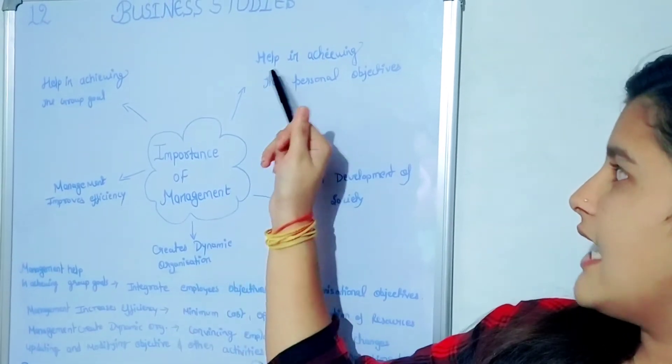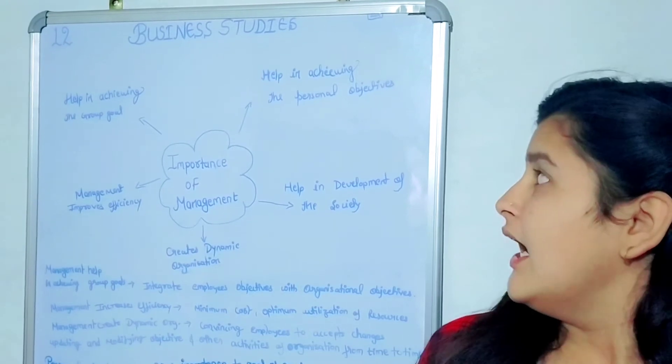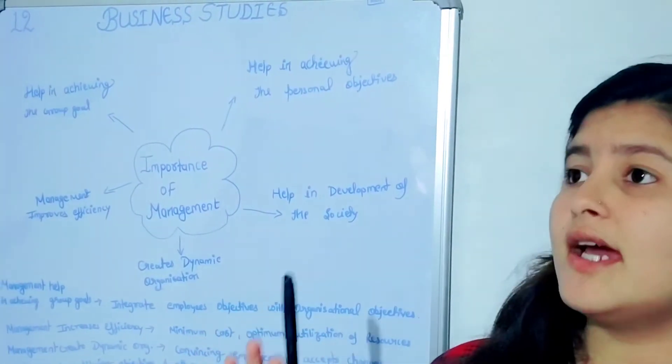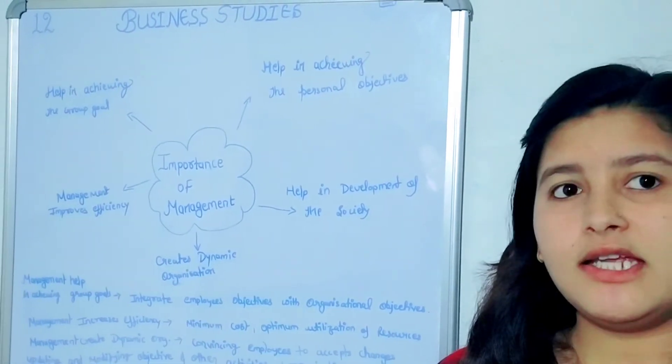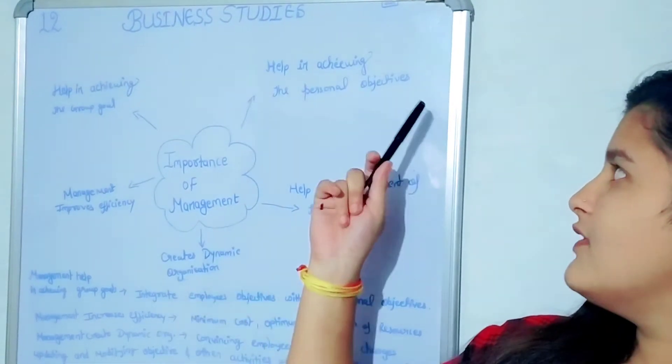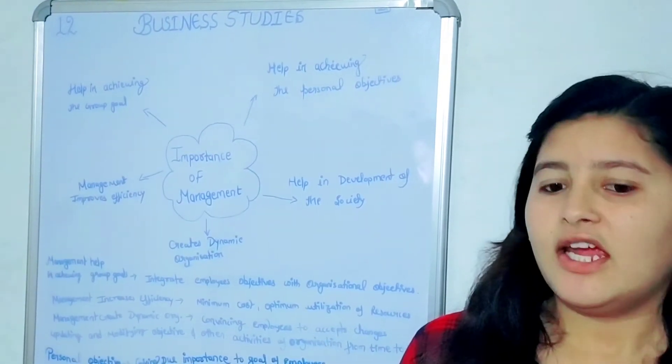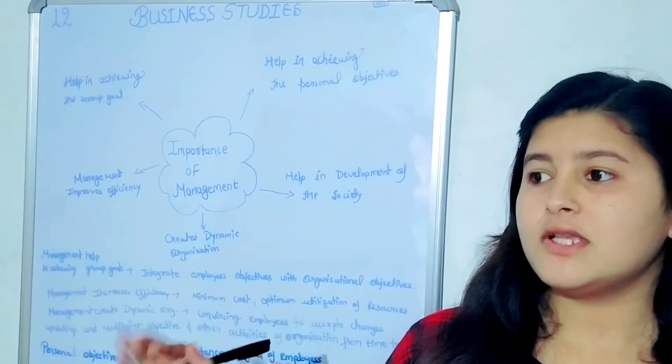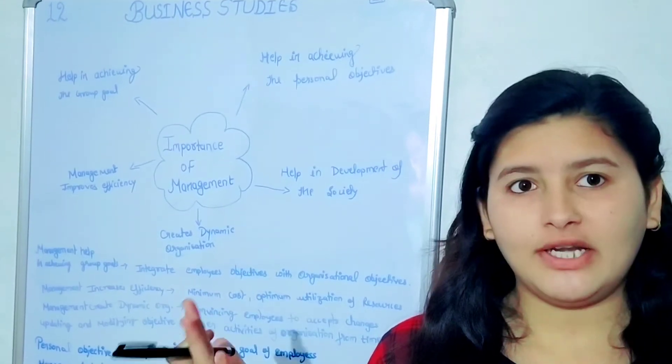Now coming to the next, help in achieving the personal objective. Help in achieving the personal objective means every organization has some specific objectives, but individuals working in the organization have their own individual objectives. The individual objective is going to be achieved if individuals working in the organization with their different efforts are united by the manager.